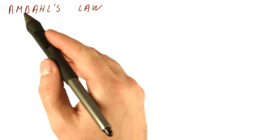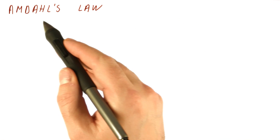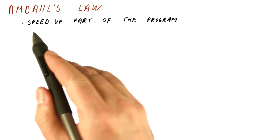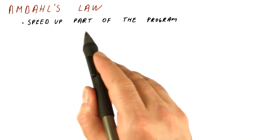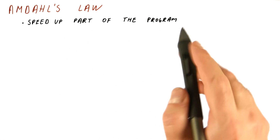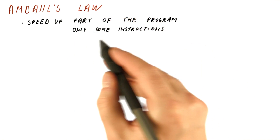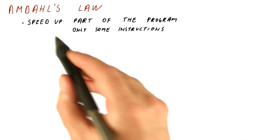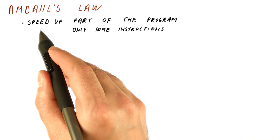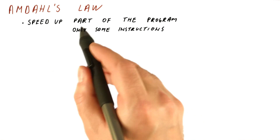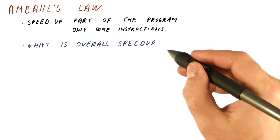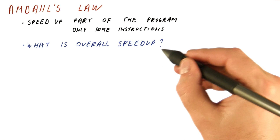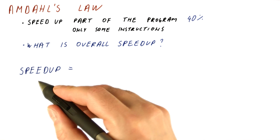Another equation that we will very often use is Amdahl's law, which we need to use when we are about to speed up only part of the program, only some instructions. So basically, when we have a speed up but it doesn't apply to the entire program, and we want to know what is the overall speed up on the entire program.